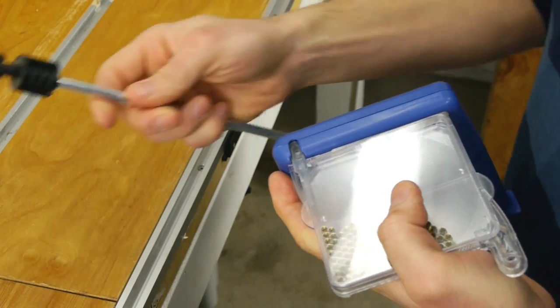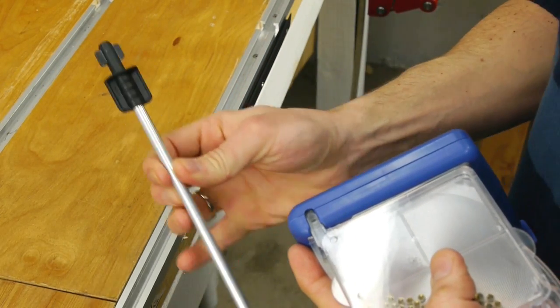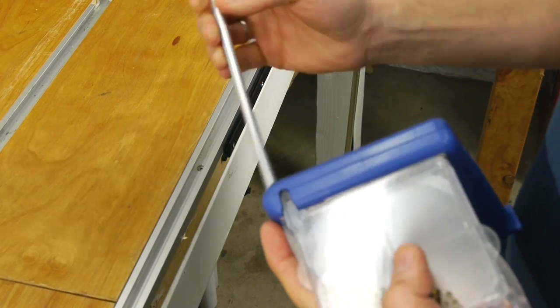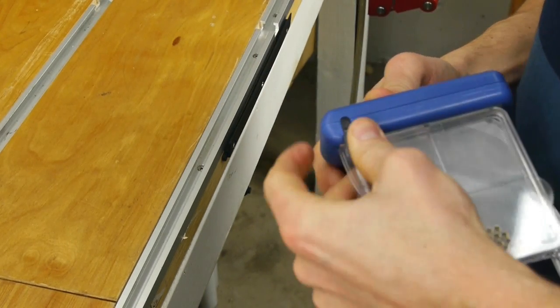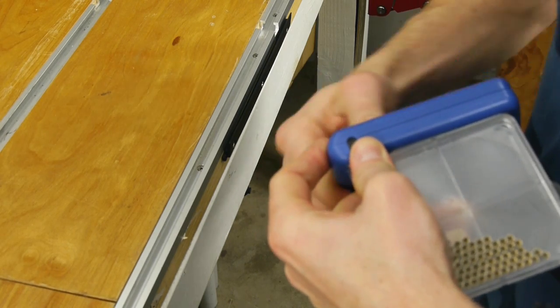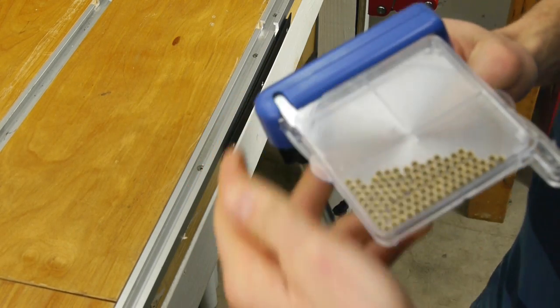Now we're going to take our tube - in this case we've got the small primer tube - and we're going to insert it into the bottom of the unit the way that the tabs line up. Then it's going to tighten anti-clockwise.